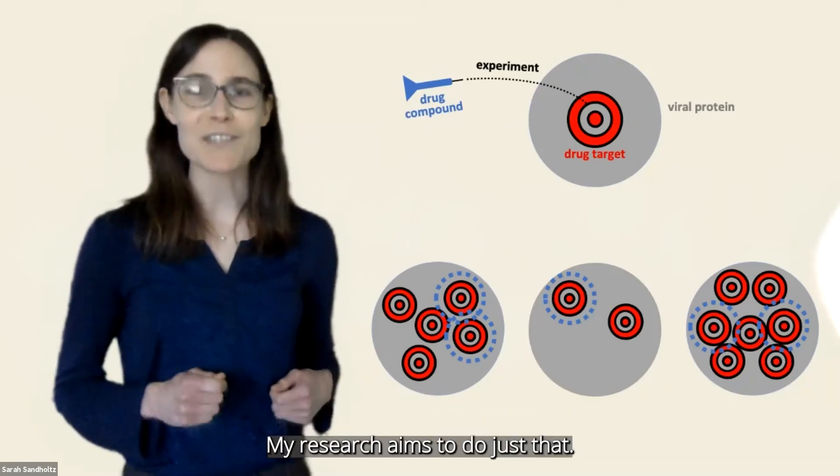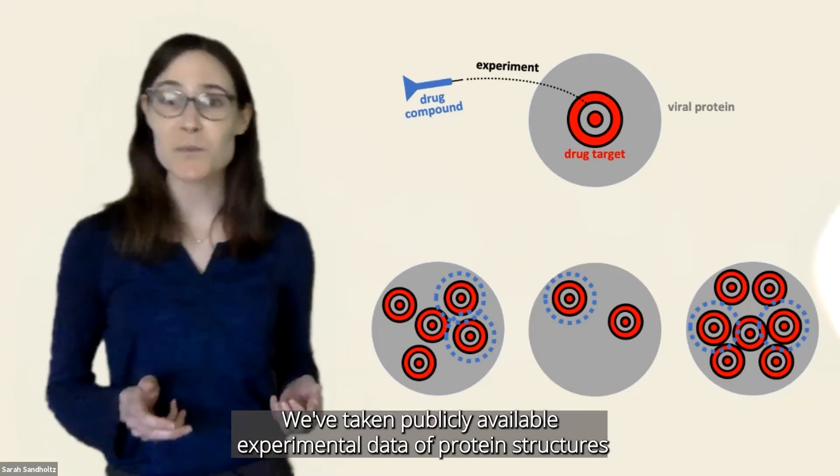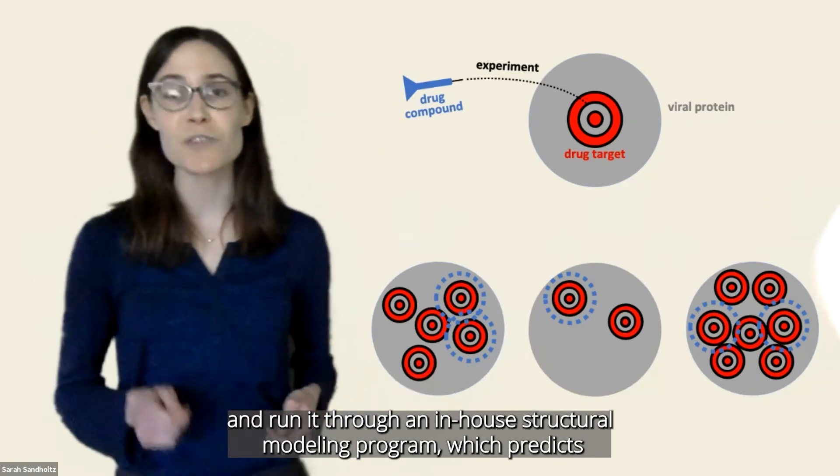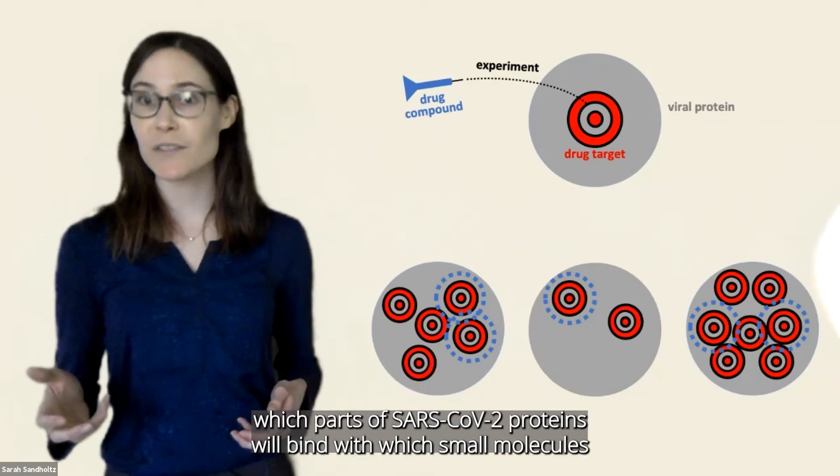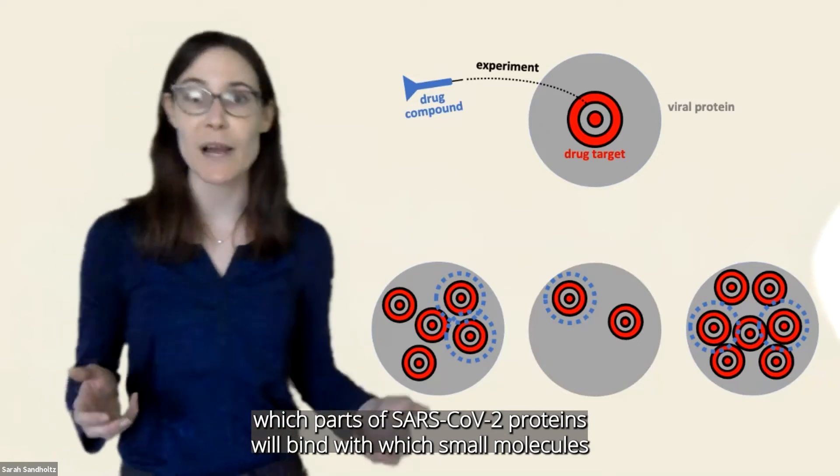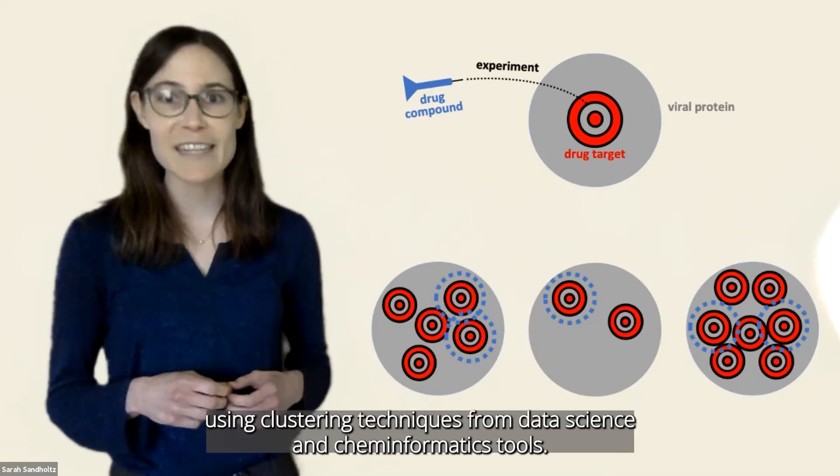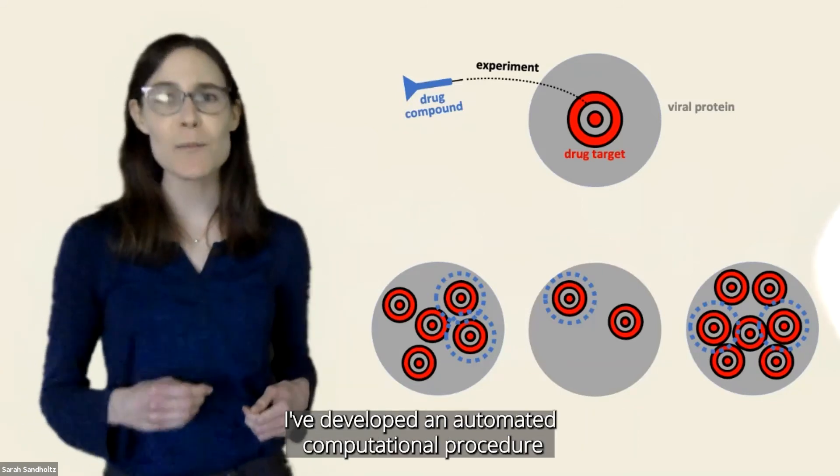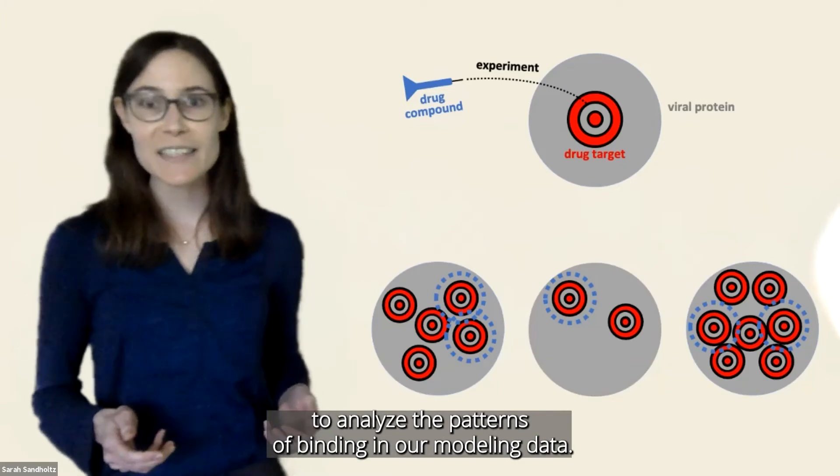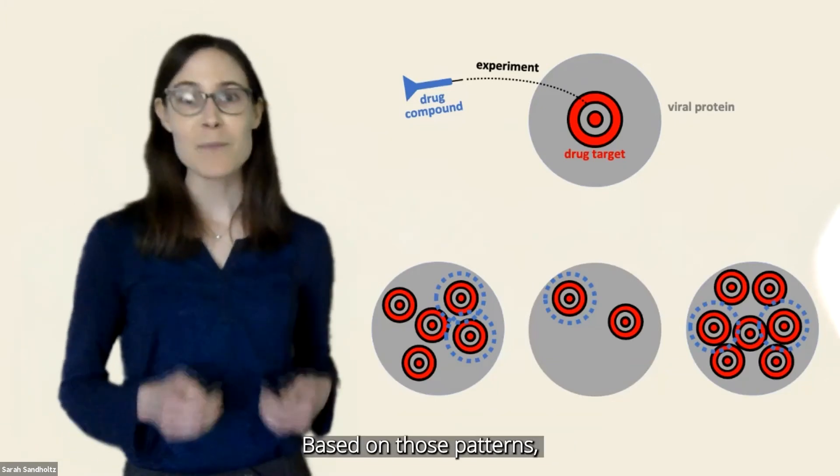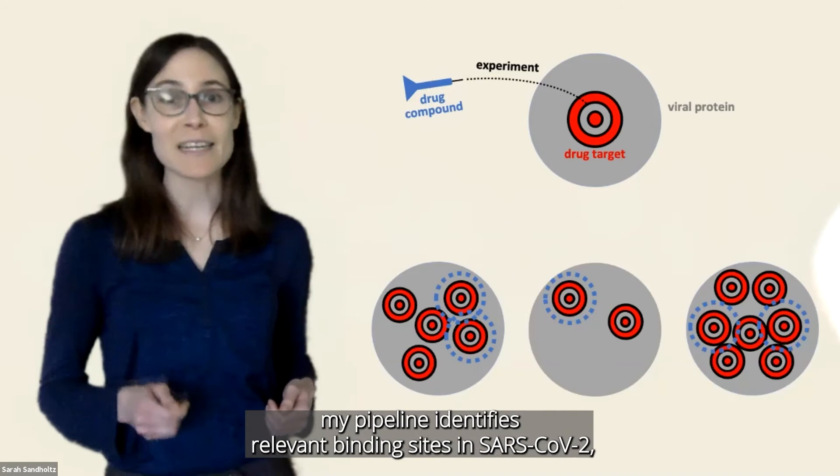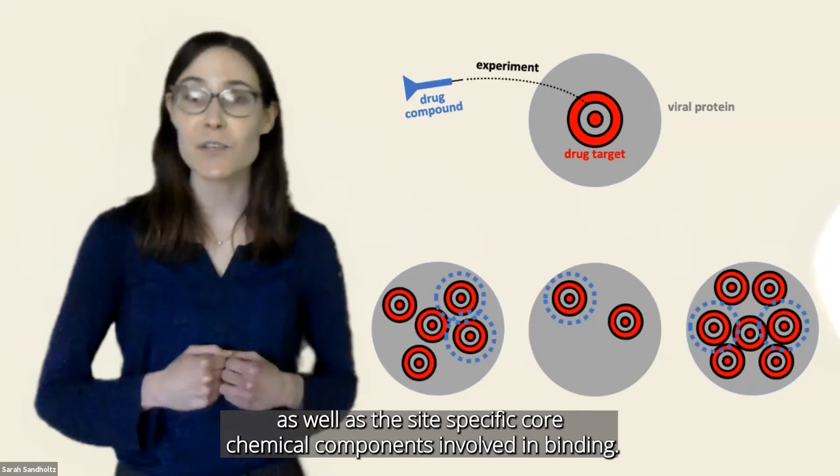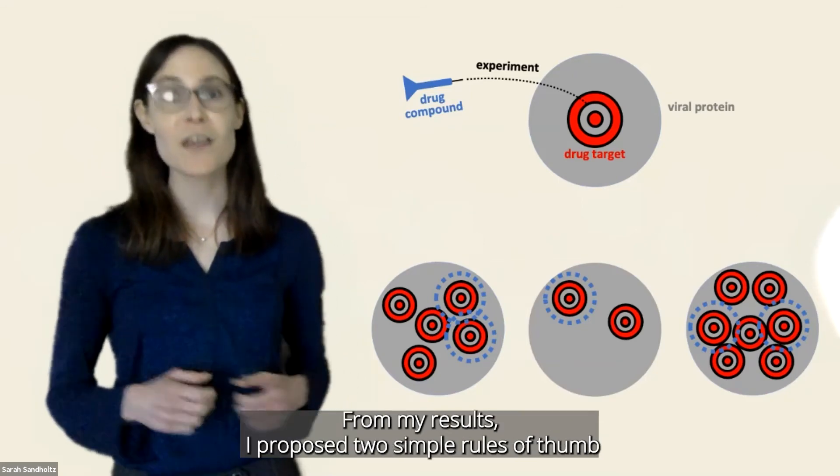My research aims to do just that. We've taken publicly available experimental data of protein structures and run it through an in-house structural modeling program, which predicts which parts of SARS-CoV-2 proteins will bind with which small molecules. Using clustering techniques from data science and chem informatics tools, I've developed an automated computational procedure to analyze the patterns of binding in our modeling data. Based on those patterns, my pipeline identifies relevant binding sites in SARS-CoV-2 as well as the site-specific core chemical components involved in binding.